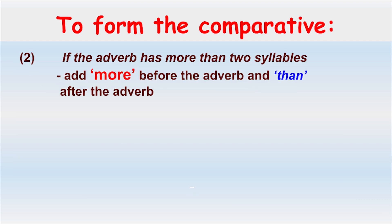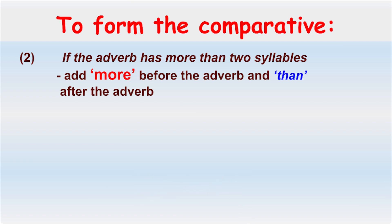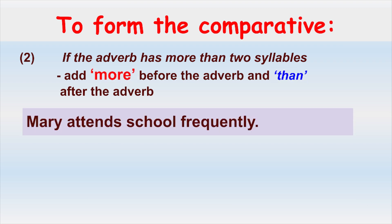Rule number two of forming comparative adverbs: if the adverb has more than two syllables, we add 'more' before the adverb and 'than' after the adverb. We will use our second sentence, 'Mary attends school frequently,' as an example because the adverb 'frequently' has more than two syllables.